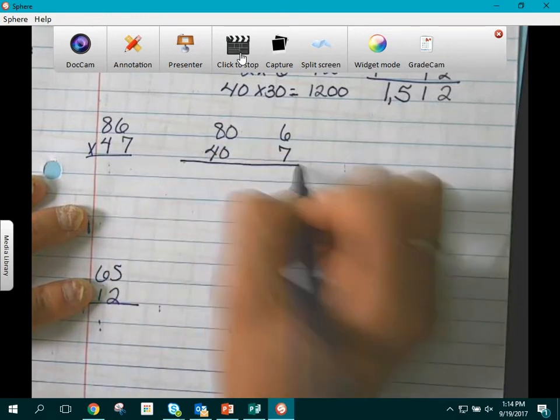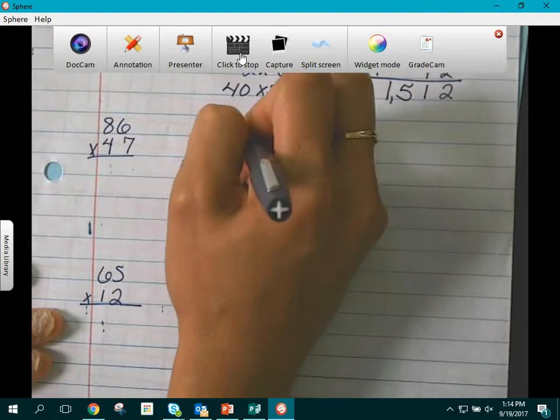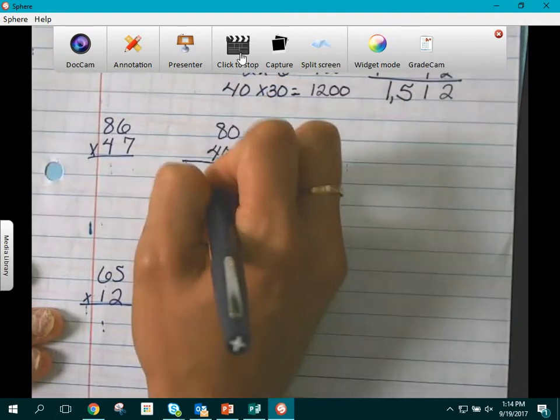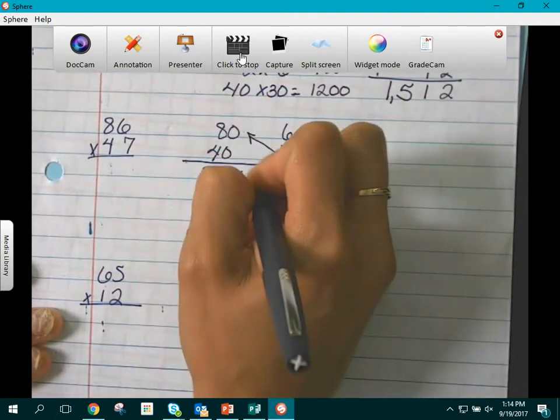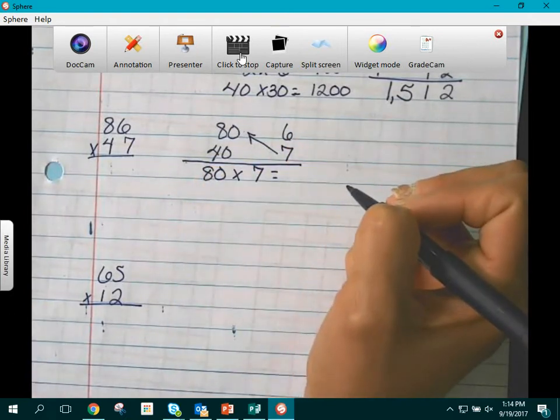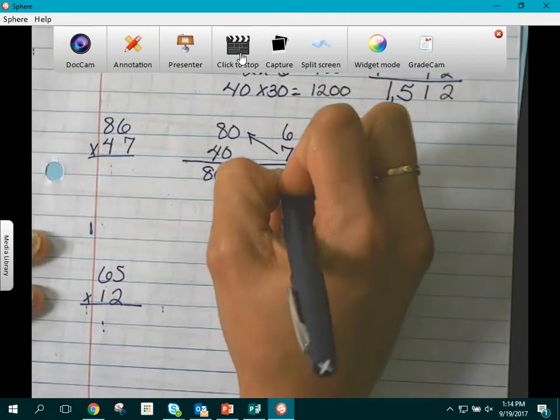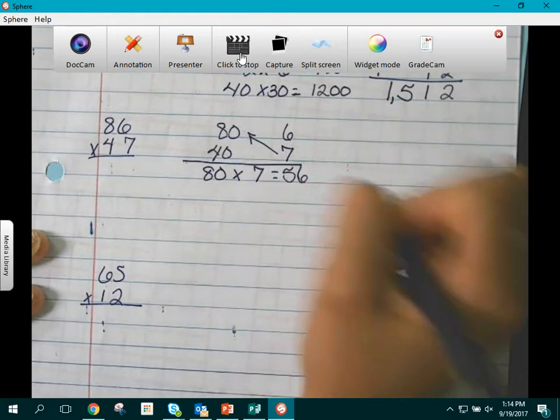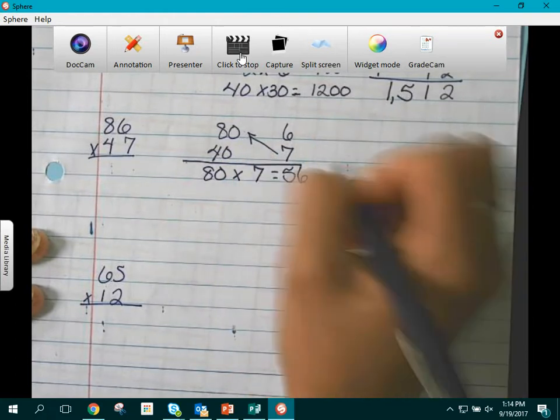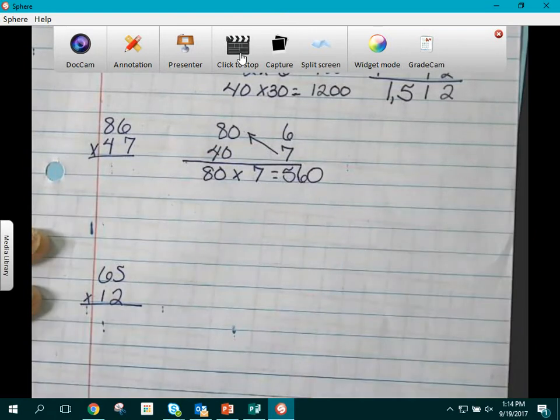Now we can go ahead and multiply. We are going to take 7 times 80. Which 8 times 7 is 56. But because it is in the tenth place, that is 56 tenths. Which will give us a value of 560.